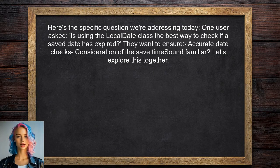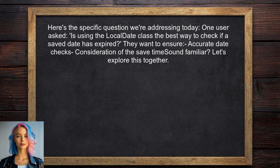Here's the specific question we're addressing today. One user asked: Is using the LocalDate class the best way to check if a saved date has expired? They want to ensure that their utility class accurately checks if a date is before the current date, considering the time when the user clicks save.